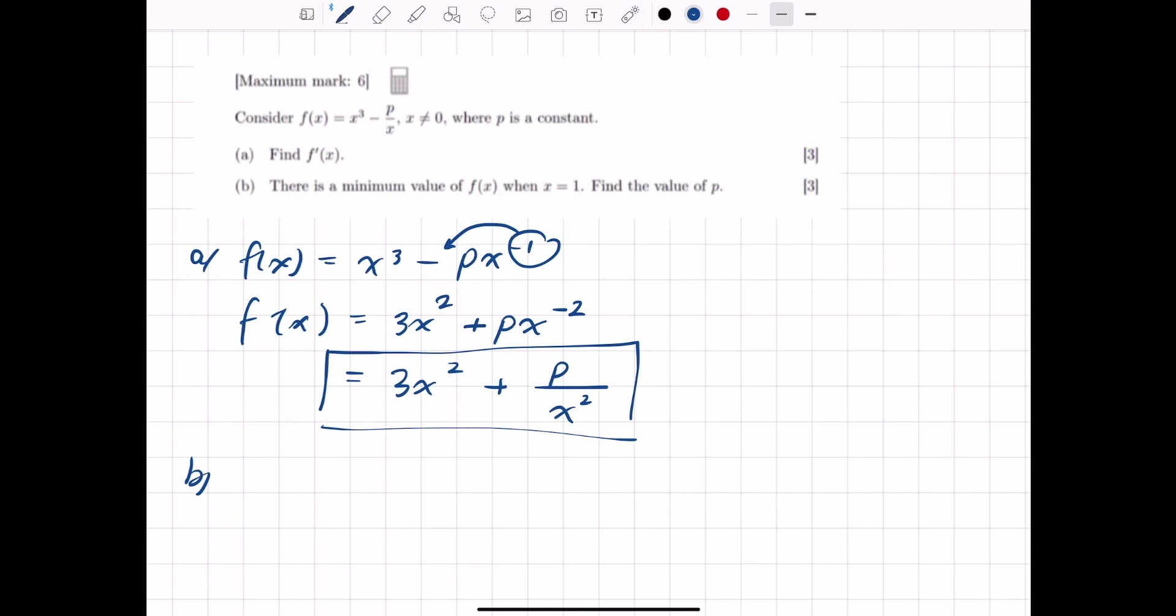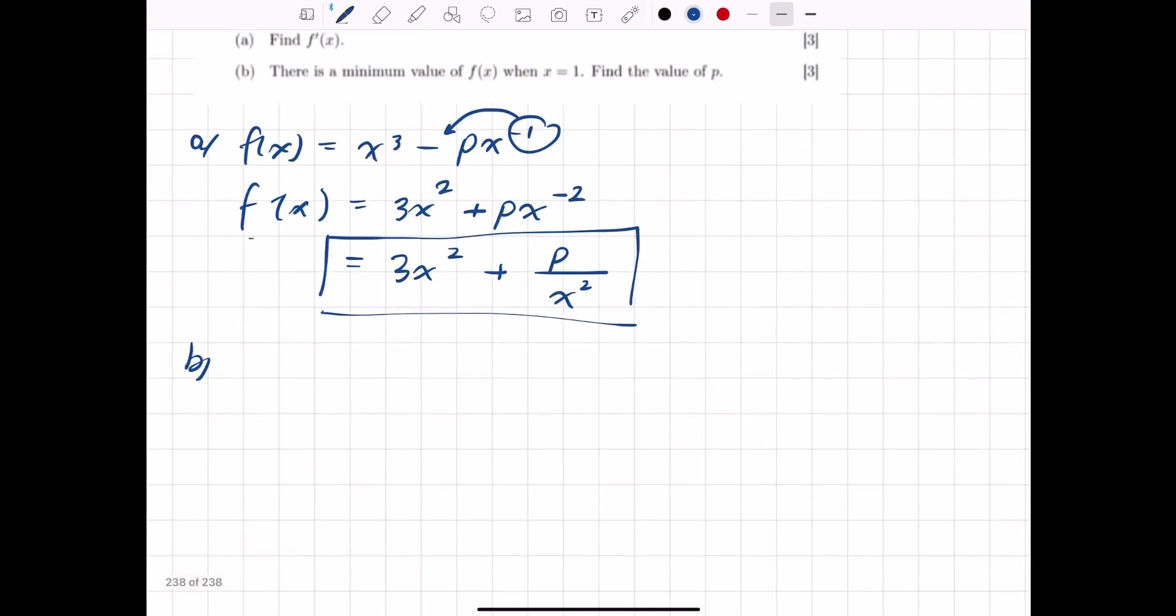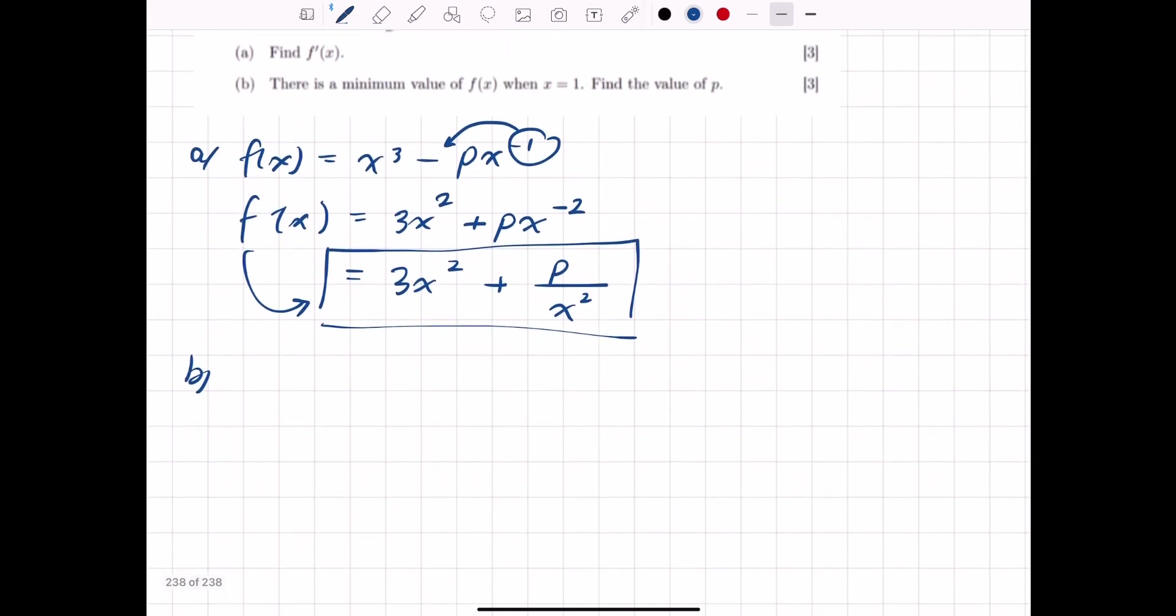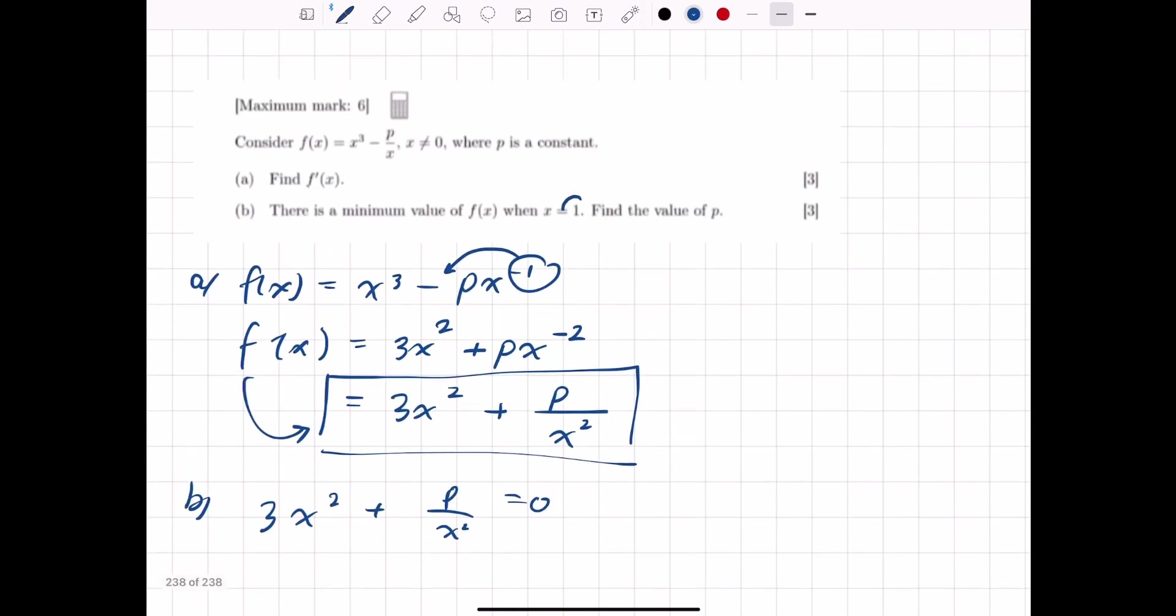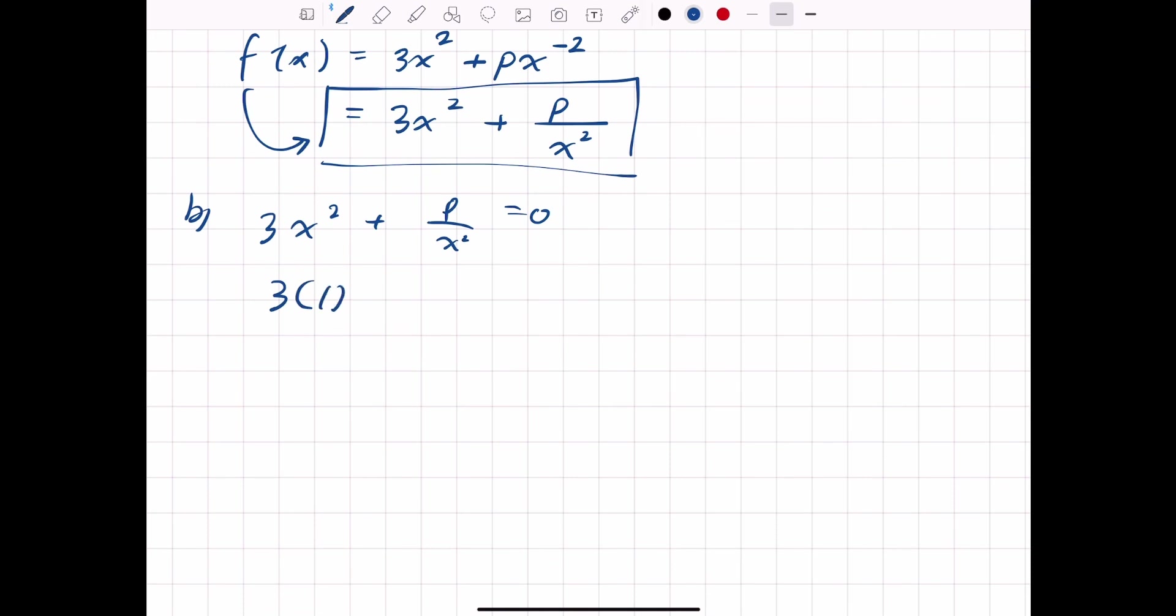But now we have a minimum value of f of x when x is equal to 1. Find the value of p. Now, this is not too difficult, but you just need to make sure you know what it means when it's asking you for a minimum. When it's asking you for a minimum or maximum, that really just means you're setting your first derivative to 0. And because we've calculated our first derivative here, it's not too hard to do. This is just 3x squared plus p over x squared equals 0. But they give us a little bit of information. They say x is equal to 1. So let's plug in 1. And then this just becomes 3, p equals, p equals negative 3. Ta-da!